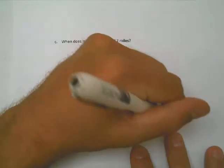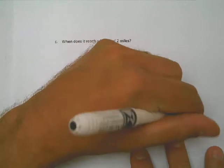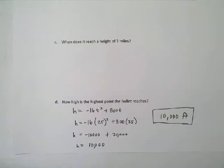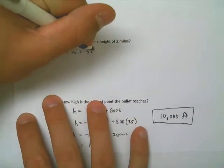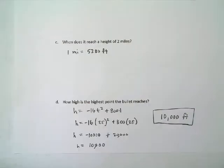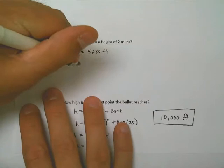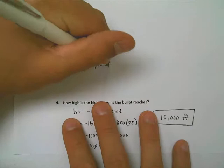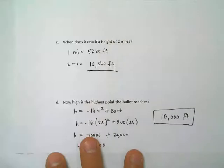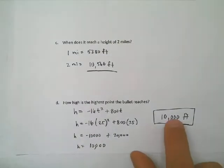That actually helps us solve part c. When does it reach a height of two miles? So first we have to know how high a mile is. A mile is 5,280 feet. One mile is 5,280 feet. So two miles would be 5,280 times 2, which is 10,560 feet. Now notice, that's 10,560 feet. And the highest point the bullet reaches is 10,000 feet. So we've got a problem here. It doesn't go that high. Makes part c pretty easy, doesn't it?